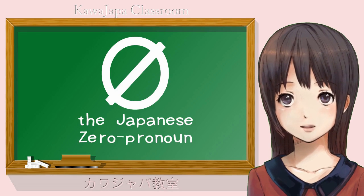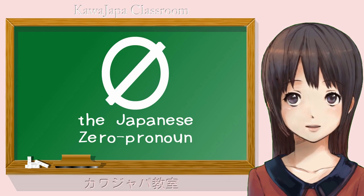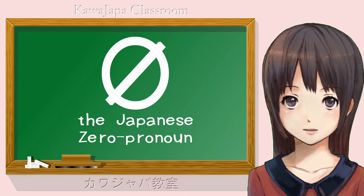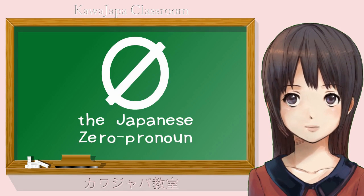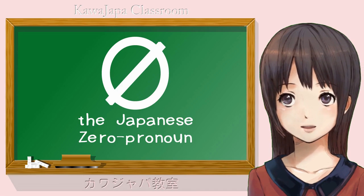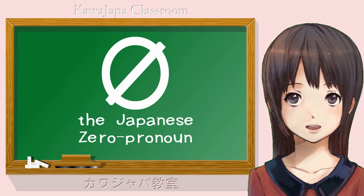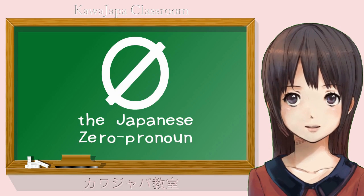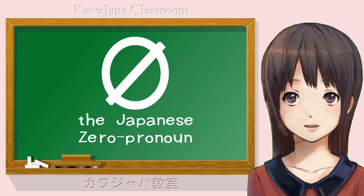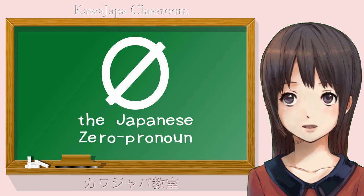This is very unfortunate, because you really need to know this in order to understand Japanese. Let us begin with an English sentence. Mary got out of Mary's car, went into Mary's house, and proceeded up the stairs. When Mary got to Mary's room, Mary opened the door and saw that Mary's things were scattered all over the floor. Is that a grammatical English sentence? Yes, it is. Is it a natural English sentence? No, it is not.